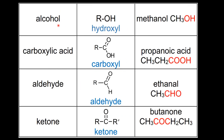Next we have the alcohols — the functional group is called the hydroxyl group and an example is methanol. The carboxylic acids have a carboxyl group — an example is propanoic acid.